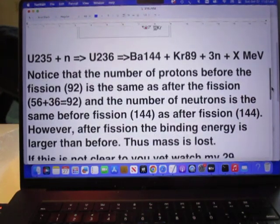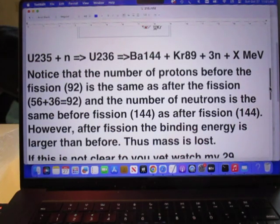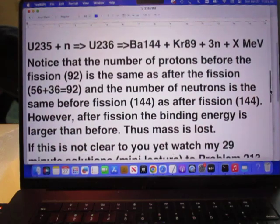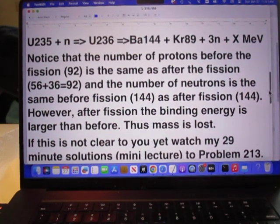Notice that the number of protons before the fission, which is 92, is exactly the same as after the fission. Again 92.